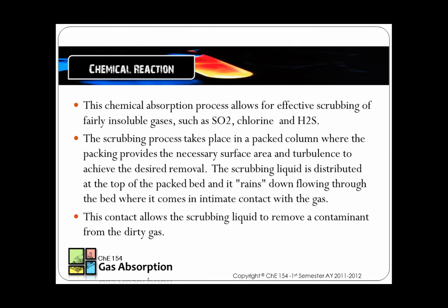In many instances, the liquid contains a reactive solution that enhances the degree of absorption by reacting with the dissolved contaminant and removing it chemically. This chemical absorption process allows for effective scrubbing of fairly insoluble gases such as sulfur dioxide, chlorine, and hydrogen sulfide. The scrubbing process takes place in a packed column where the packing provides the necessary surface area and turbulence to achieve the desired removal. The scrubbing liquid is distributed at the top of the packed bed and drains down flowing through the bed where it comes in intimate contact with the gas. This contact allows the scrubbing liquid to remove a contaminant from the dirty gas.